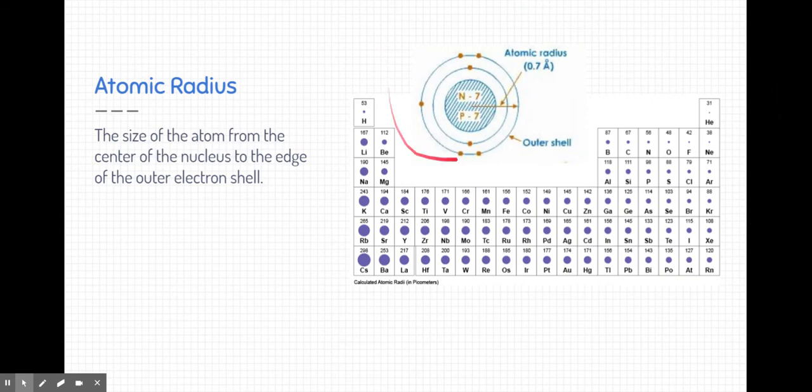So here you can see an example of nitrogen, and you can see the atomic radius is from the center of the nucleus to the outer edge of the electron shell. Now this nucleus has a radius of 0.7 angstroms.